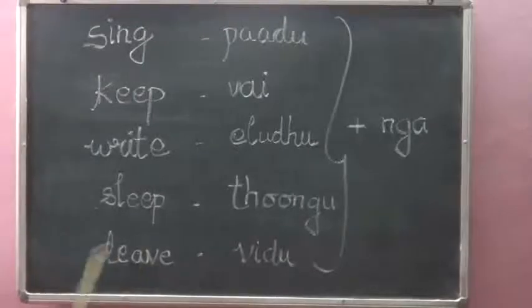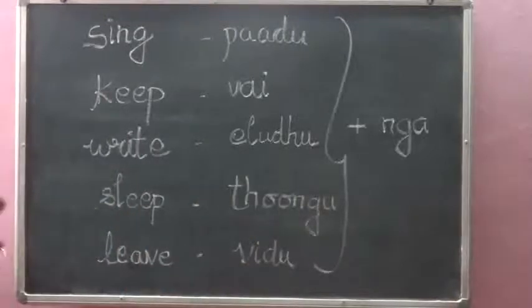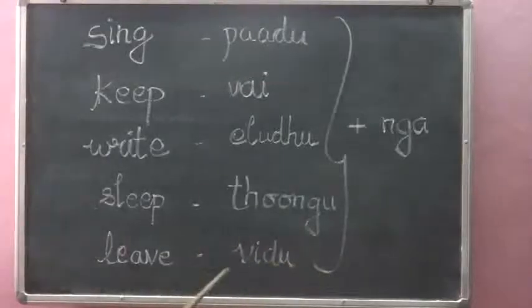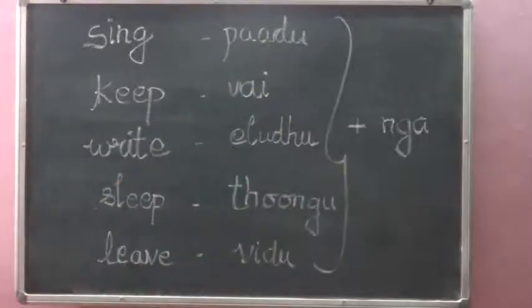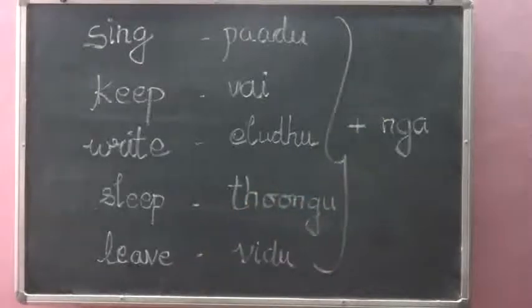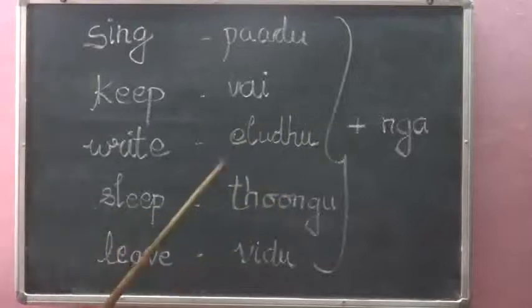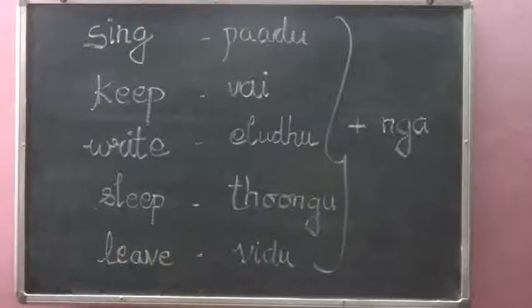The fifth word is 'leave.' Suppose you want to say 'leave me, mom' — how will you say that? You will say 'vidu me, mom.' Adding the tone of respect, we must add 'nga.' Hope you understood everything, thank you.